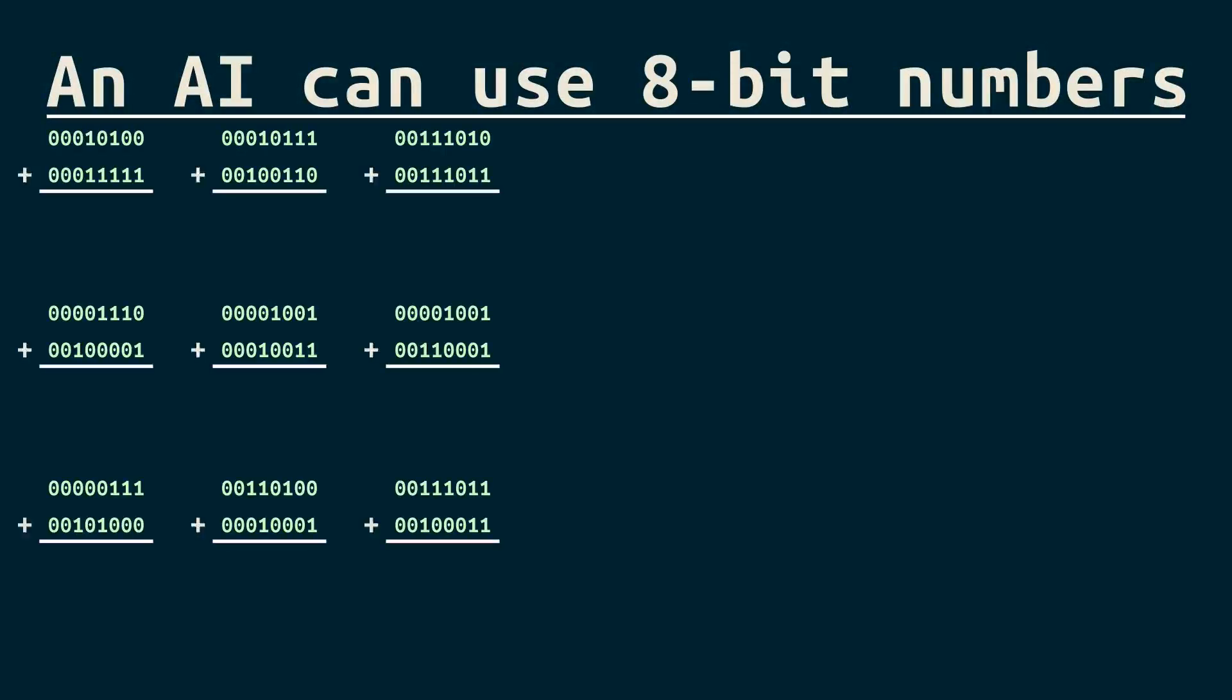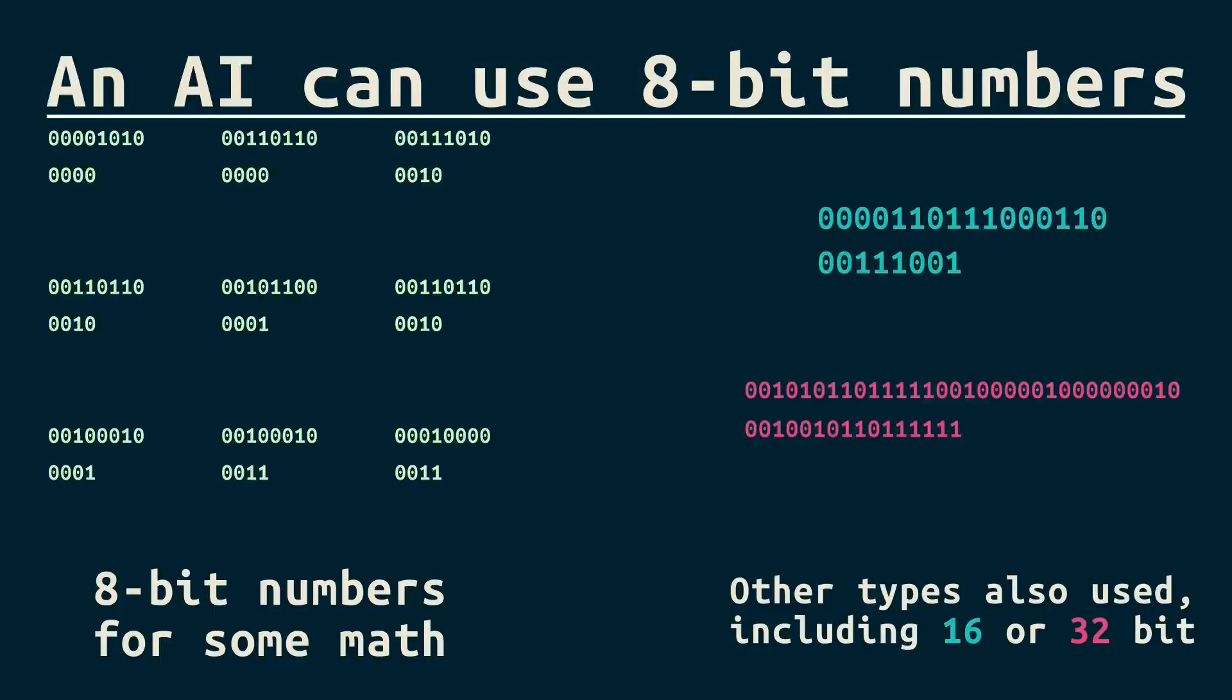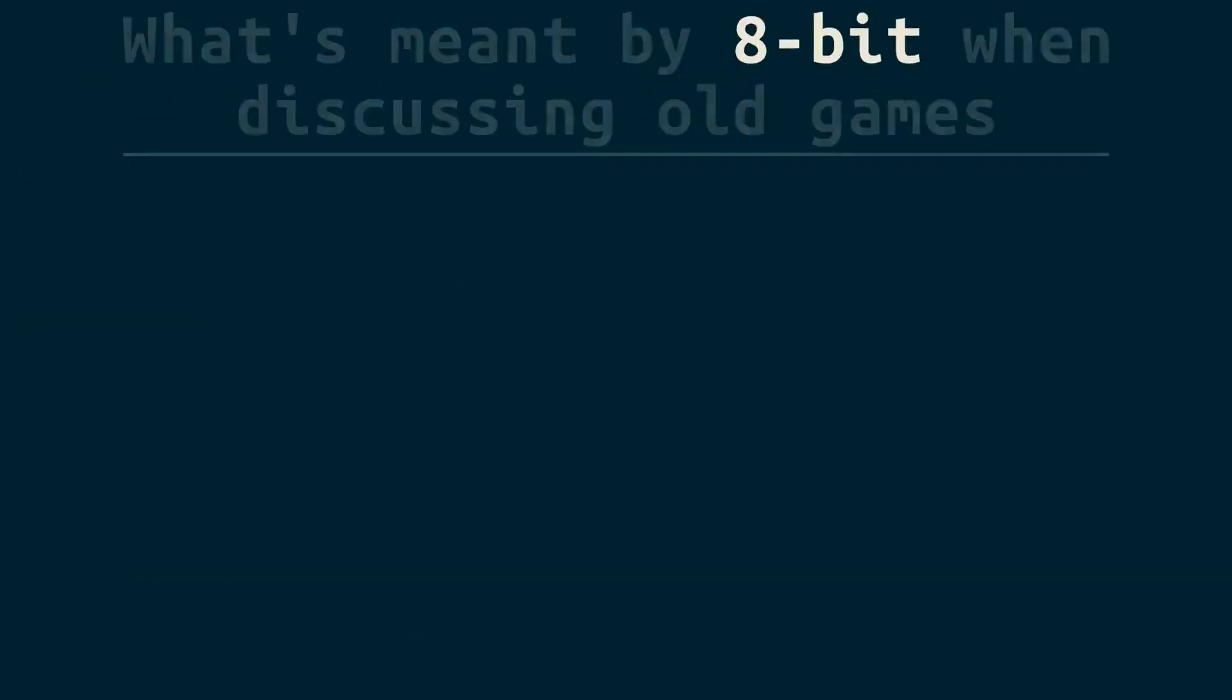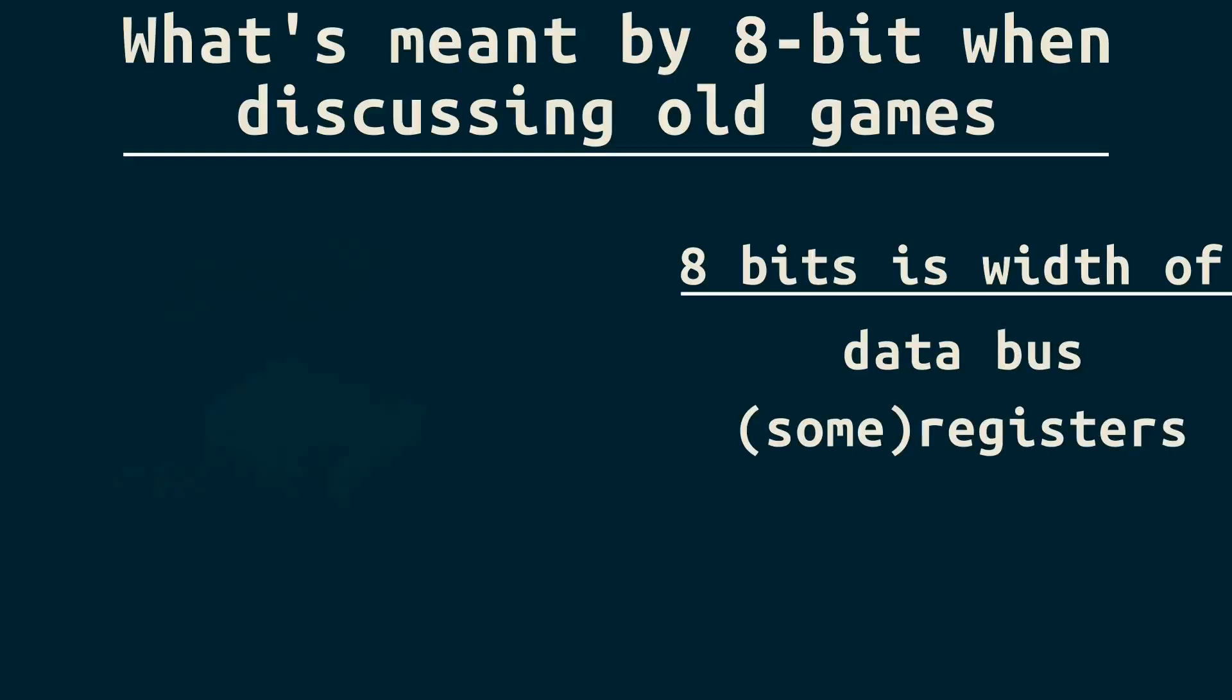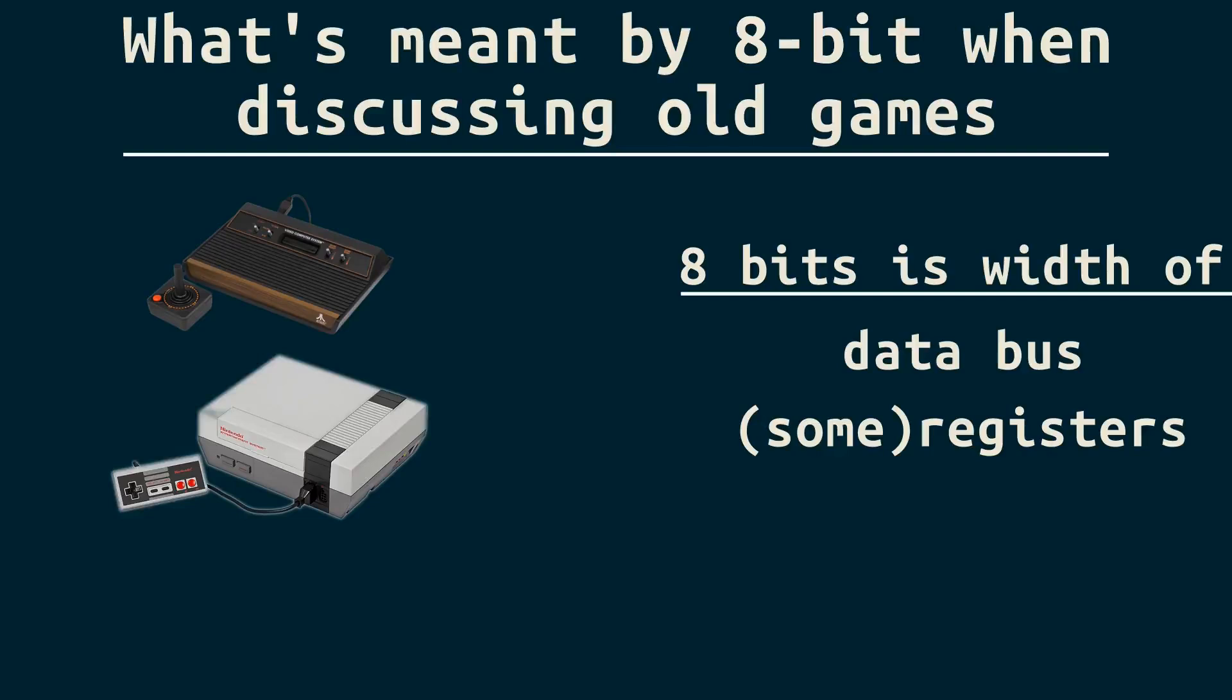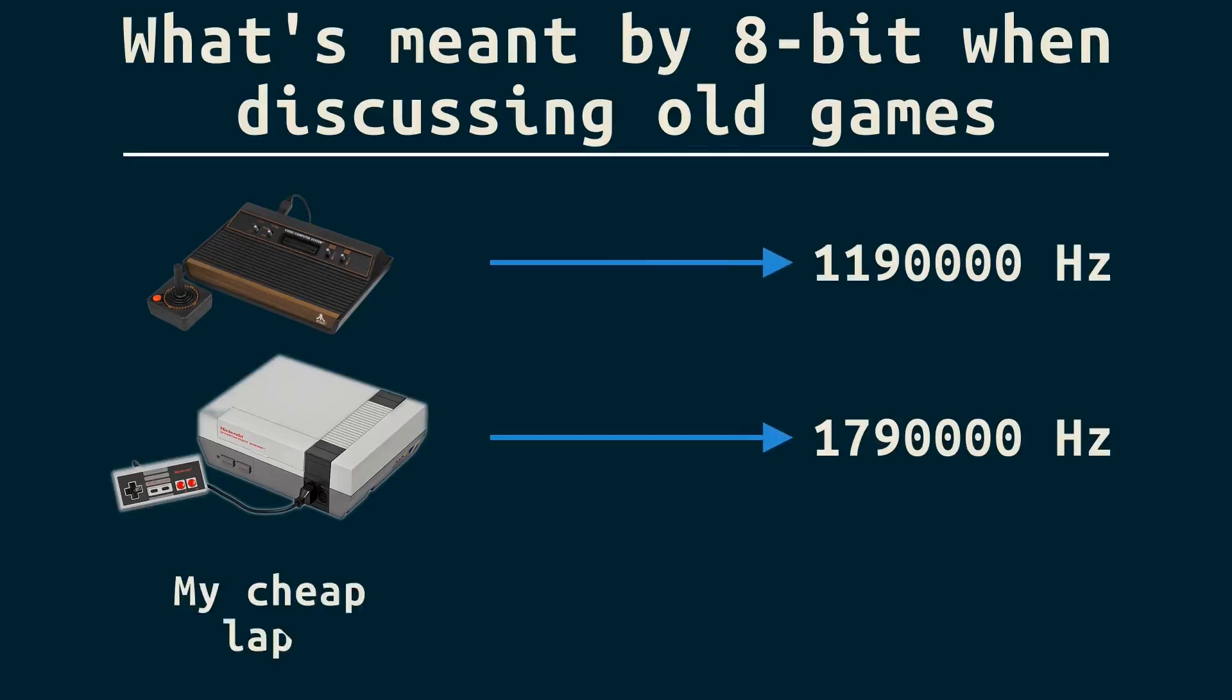An AI can use 8-bit numbers to do some, not all, of its math. Whereas the term 8-bit, as it applies to old games, describes the width of certain parts of their hardware, and is associated with a bygone era of computing. 8-bits might sound slow because computers in that era were slower, or because of 90s game commercials like this.